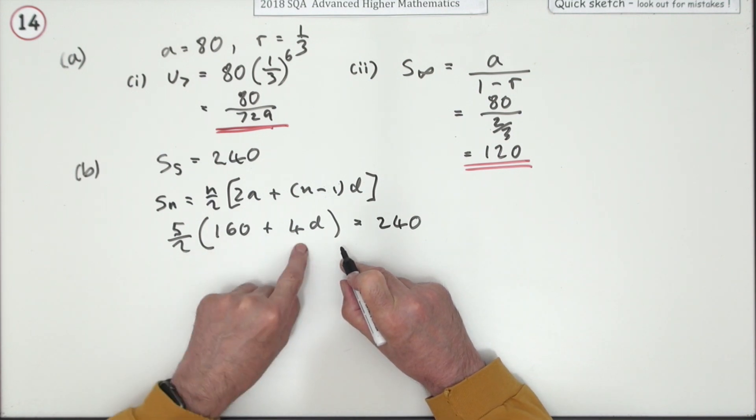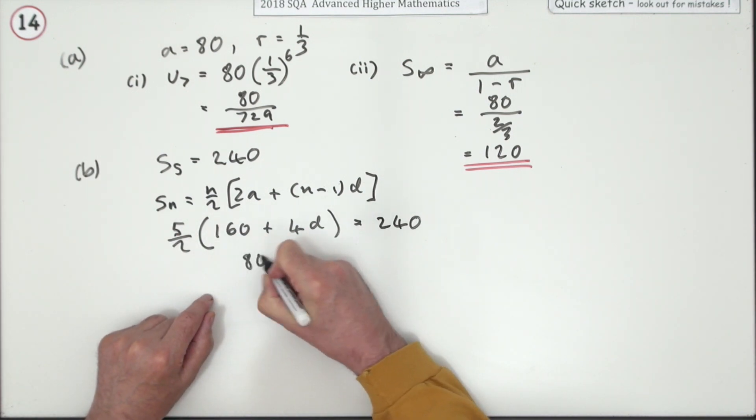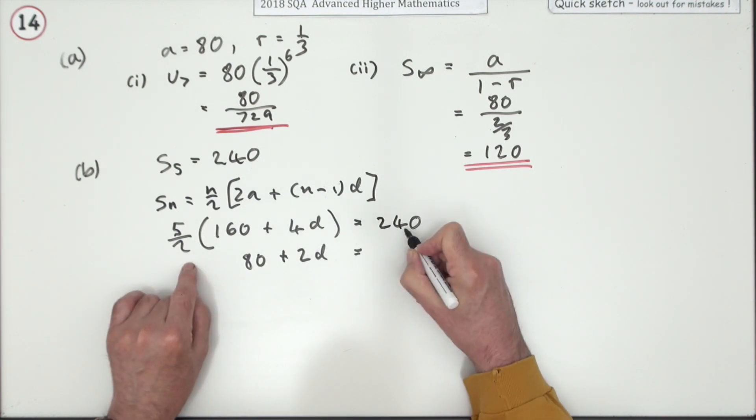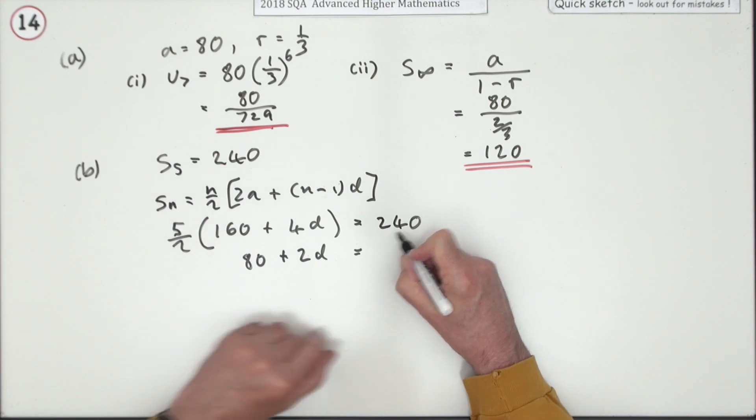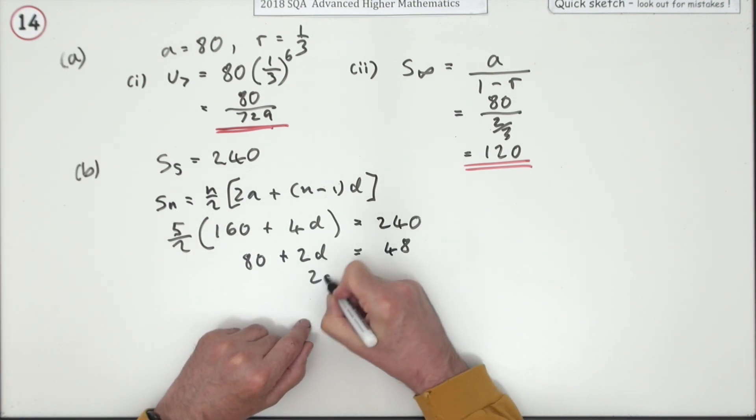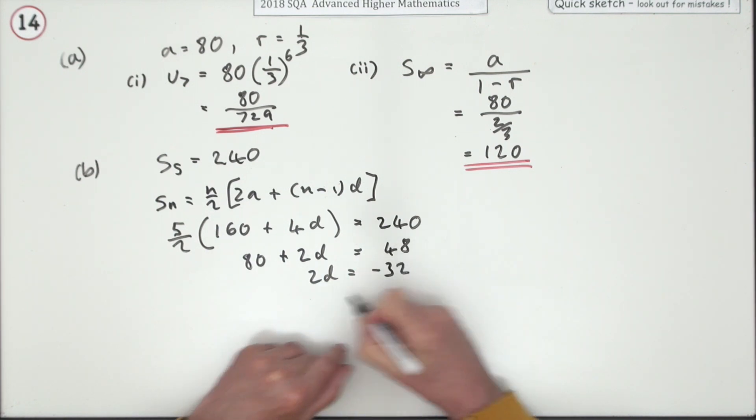I'm not going to multiply that out because I can half them and take that five across and divide. So, halfing them, I've got 80, and then it's back again, plus 2d equals 5 into it, 48. So, 2d is going to take away the 80. That will be negative 32. So, d is negative 16.